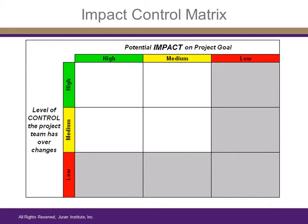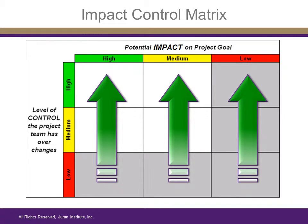The axis to the left is a scale of control, or the level of ability that the project team has to change the potential cause of the problem or defect the team is trying to improve. Similar to the axis for impact, the higher to the top of the matrix the potential cause, the greater the ability of the project team to change or control it, as indicated by the directional arrows.